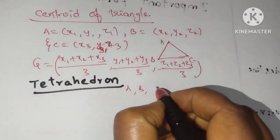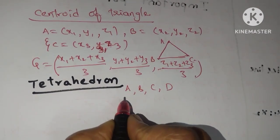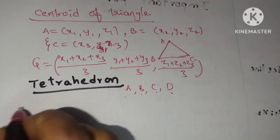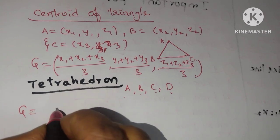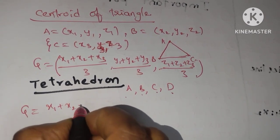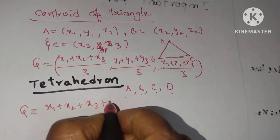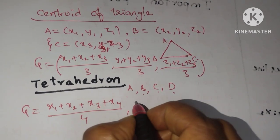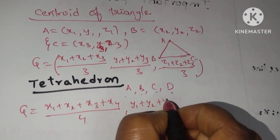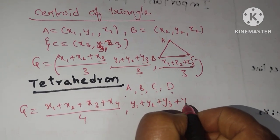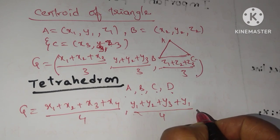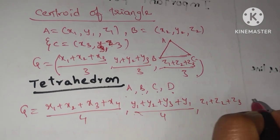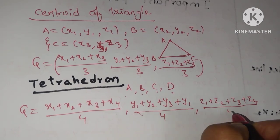A, B, C, D. So A is X1, Y1, X2, Y2, C is X3, Y3, D is X4, Y4. So centroid of this tetrahedron is X1 plus X2 plus X3 plus X4 by 4 comma Y1 plus Y2 plus Y3 plus Y4 divided by 4 comma Z1 plus Z2 plus Z3 plus Z4 by 4.